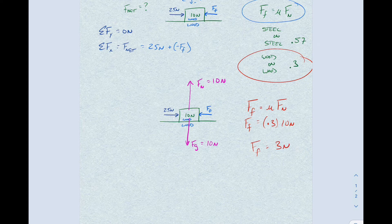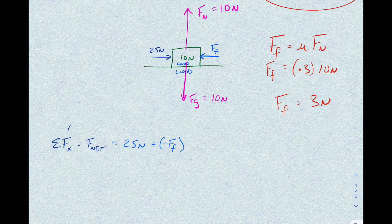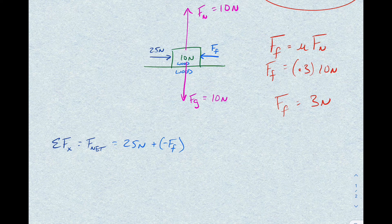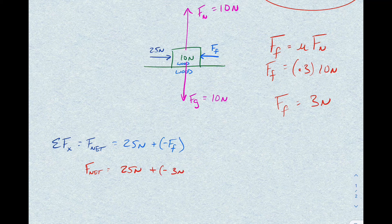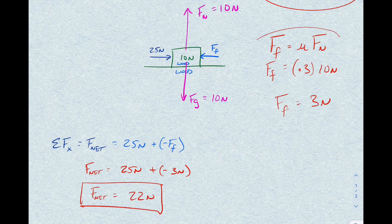This equation gives us the magnitude of friction; the direction we determine ourselves — and we know it's oppositional. So: Fnet = 25 newtons minus 3 newtons = 22 newtons. Not too different from problems we've done before, except now you have to find the friction force using the equation rather than being given it directly.